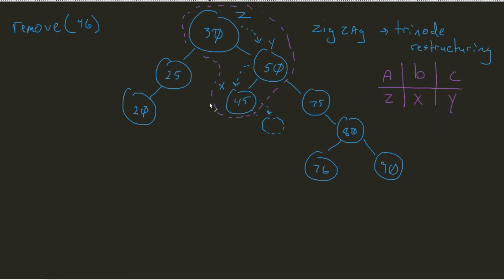So just like we've done in the past, we need to establish, given this structure, who gets my T1, my T2, my T3, and my T4 nodes. I see that T1 is coming from Z's left side, T2 is coming from X's left side, T3 is coming from X's right side, and finally T4 is coming from whatever Y's right side was.